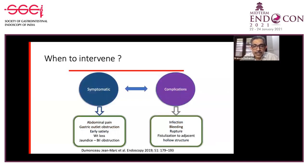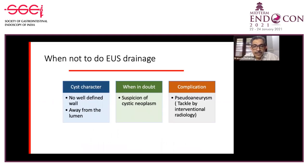Not all patients require endoscopic therapy, but if one is symptomatic, or if someone has complications like infection, bleeding, rupture, or fistulation to adjacent structures, intervention is required. If someone has severe abdominal pain or pressure effect on surrounding structures causing symptoms, they would also require intervention. We should also know when NOT to do EUS drainage.